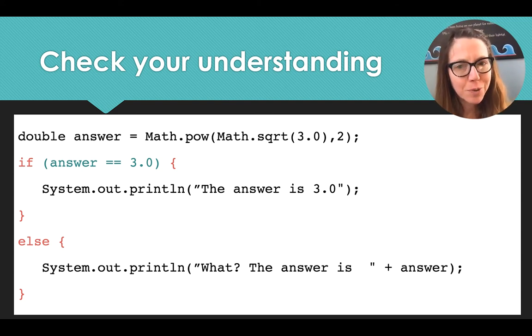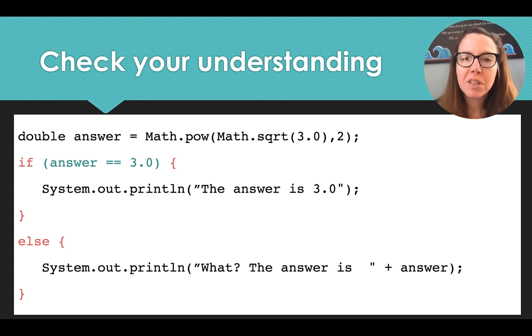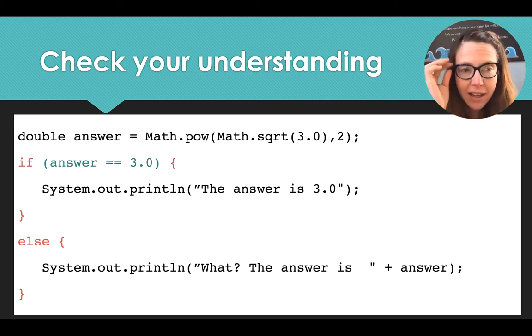So I don't know what the square root of three is. I'd use a calculator for that or a computer. But I do know that if I take the square root of something and I square it, I should get back to that same thing. So x, the square root of x squared is x.